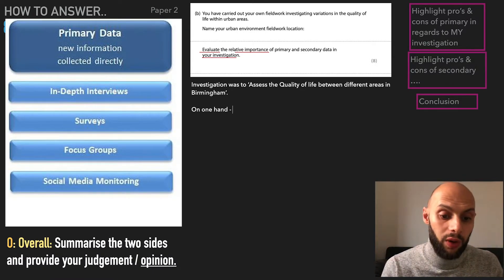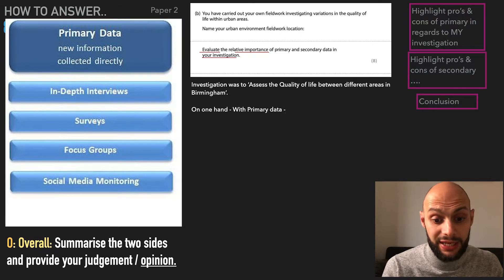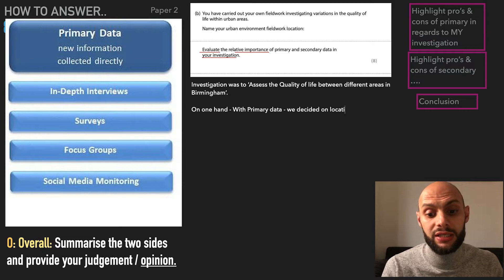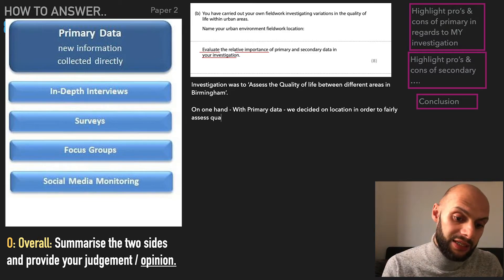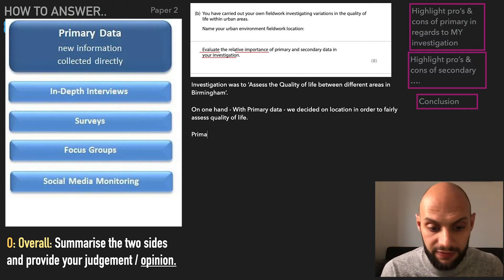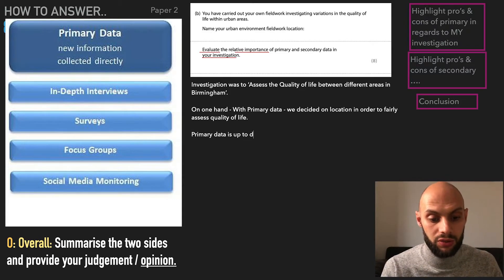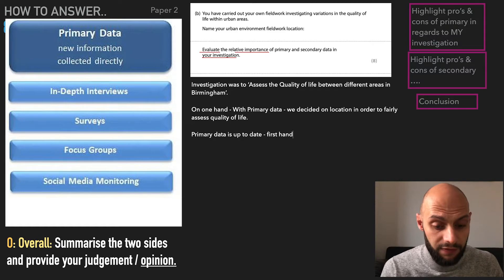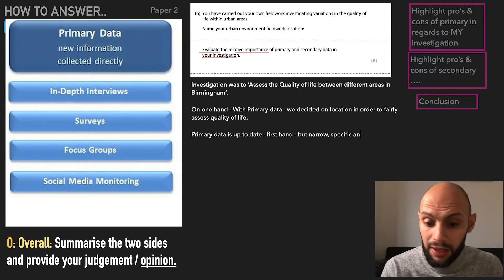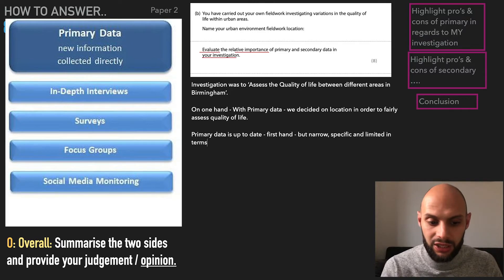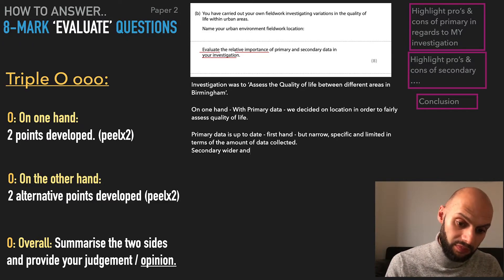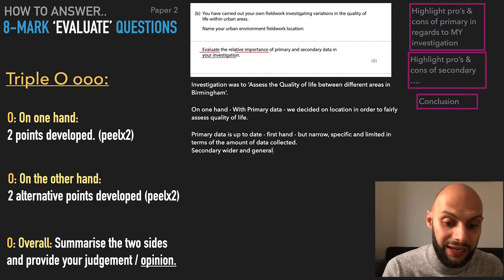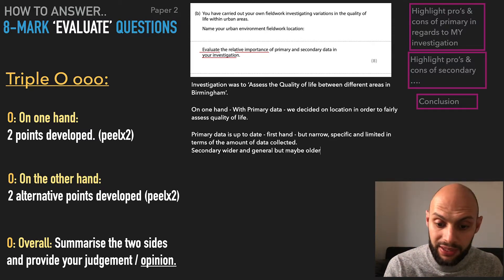On the one hand, with primary data, we decided on the location in order to fairly assess quality of life between these areas — so we got to choose where we collected it. Primary data is up to date and first hand. However, it is narrow, specific, and limited in terms of the quantity of data collected.